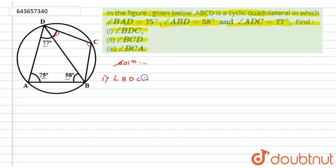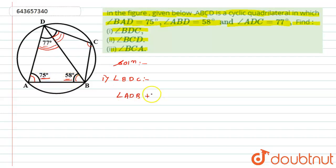First, to find angle BDC, I need angle ADB. Looking at triangle ABD, I have angle BAD and angle ABD given. So I can determine angle ADB using the angle sum property of a triangle: angle ADB plus 75 plus 58 equals 180 degrees.